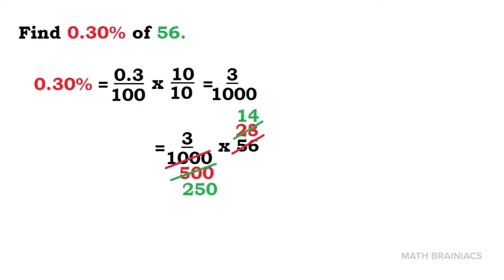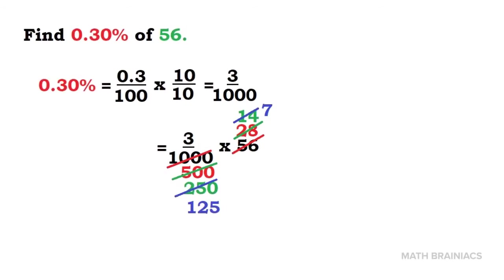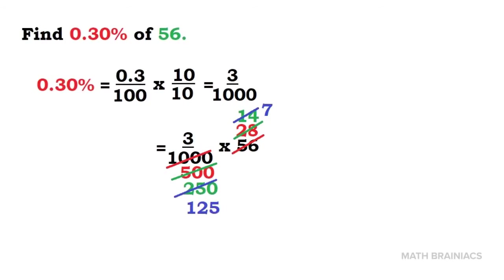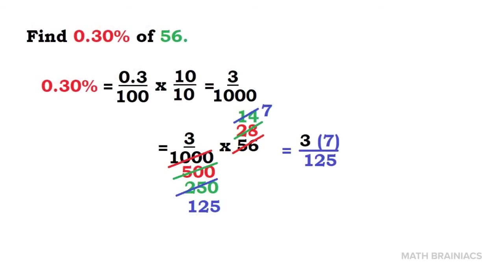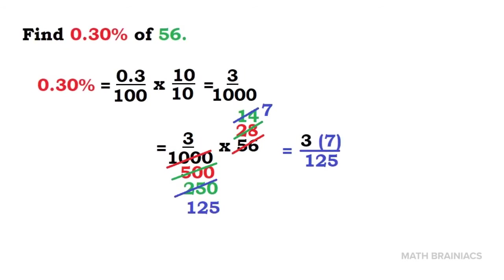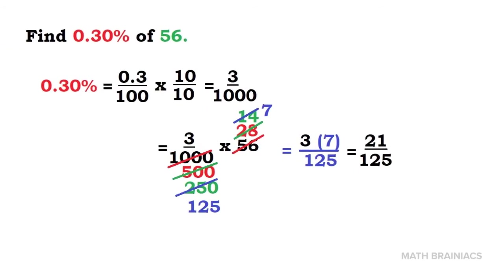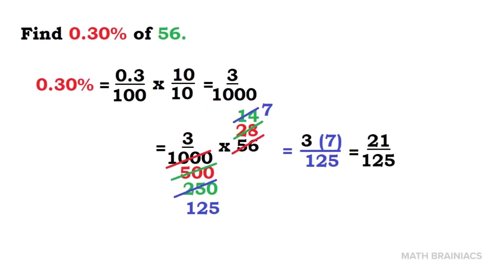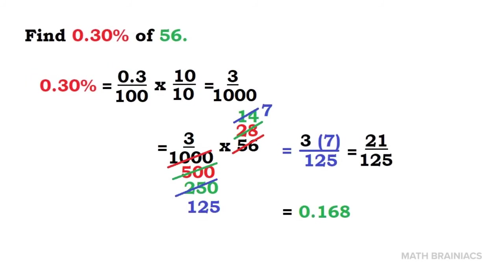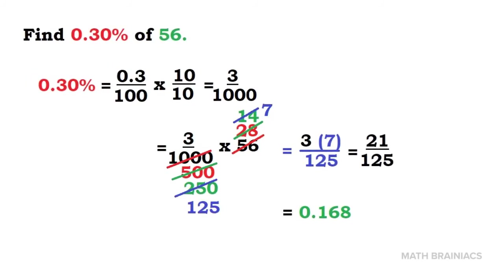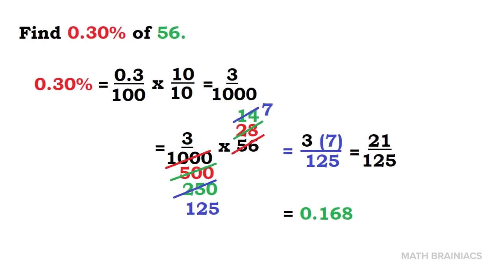2 in 14 is 7, and 2 in 250 is 125. There is no more common factor in 7 and 125. In that case, we can simplify it by 3 times 7 all over 125, and we can come up with 21 all over 125, which will give us 0.168. Accordingly, 0.3% of 56 is 0.168.